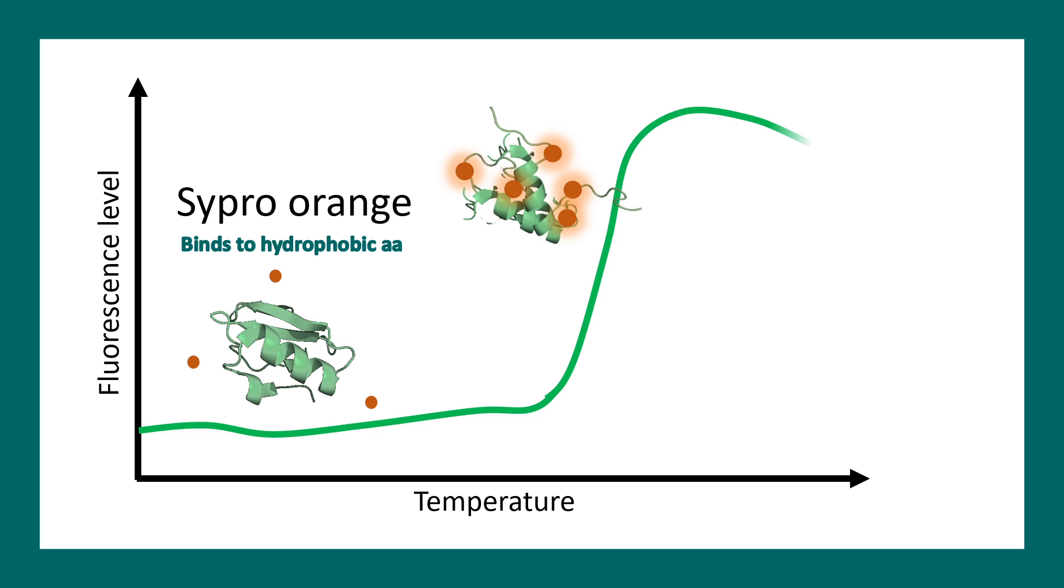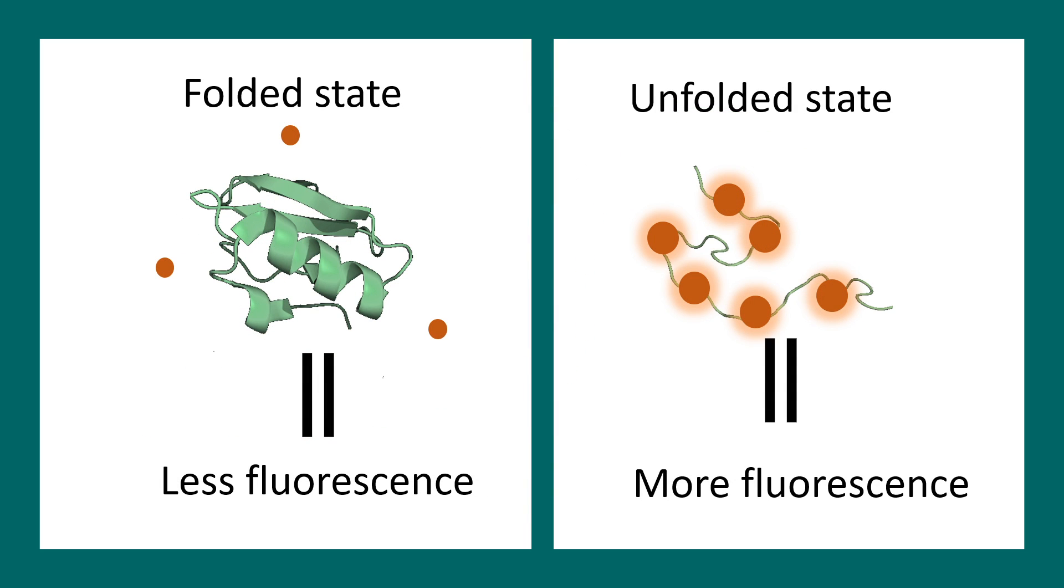When the protein denatures, the dye binds and the fluorescence increases over time. Looking at this graph, one can deduce many things. Simply, folded state means less fluorescence and unfolded state means more fluorescence.